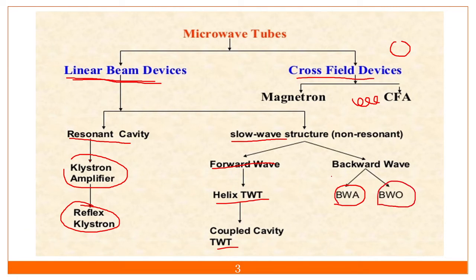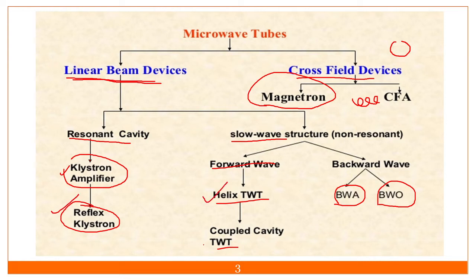There are two types in the cross-field as well — the magnetron and the CFA. So in the syllabus you have to learn about the klystron, the reflex klystron, the helix TWT, the backward wave amplifier, and the magnetron itself.